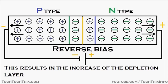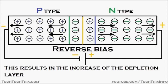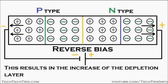This results in the increase of the depletion region and the depletion layer or space charge region. You can see the repulsion of the electrons and the holes happening against the space charge or depletion layer, resulting in the increase of the depletion layer as seen in the animation.